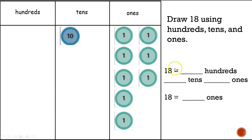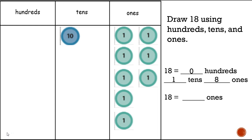Now I need to fill this chart out. Eighteen equals zero hundreds, one ten, and eight ones.